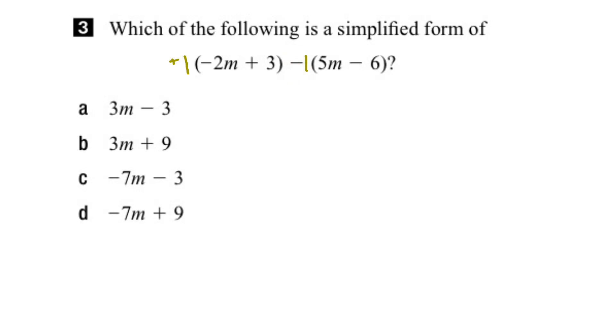To get rid of the brackets then, what we do is we distribute. We multiply what's outside the brackets by what's inside the brackets in both cases here. So what would this give us here? Positive 1 times negative 2 is negative 2m. And then positive 1 times 3 is equal to positive 3. And then we have negative 1 times 5m will give us negative 5m. And finally, we'll have negative 1 times negative 6, which would give us positive 6.